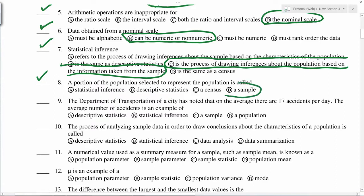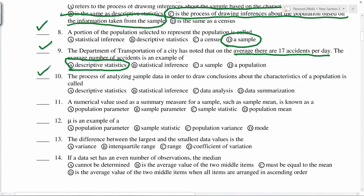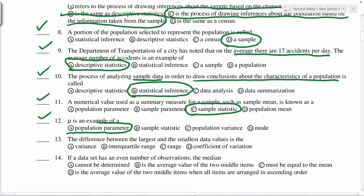A portion of the population selected to represent the population, that is a sample. On average, there are 17 accidents per day. Average number of accidents is an example of descriptive statistics. Process of analyzing sample data to draw conclusions about characteristics of a population is statistical inference. Numerical value such as mean is sample statistic. Mu is an example of population parameter, so Greek alphabets are generally used for population parameters.